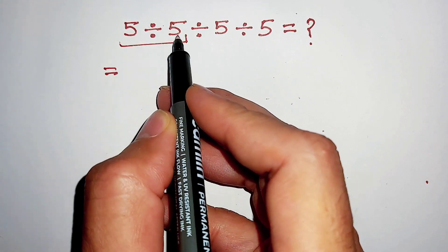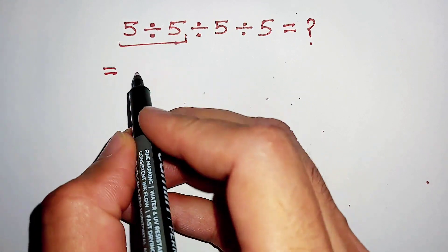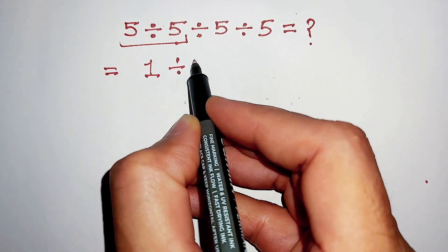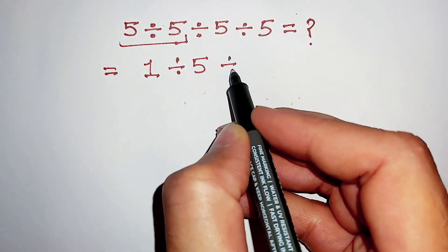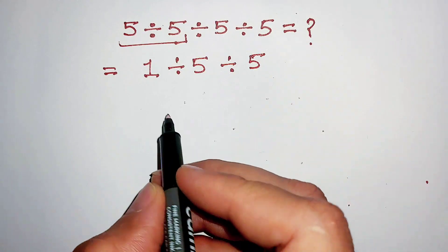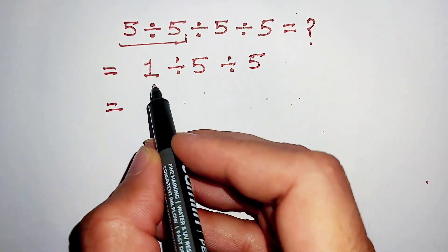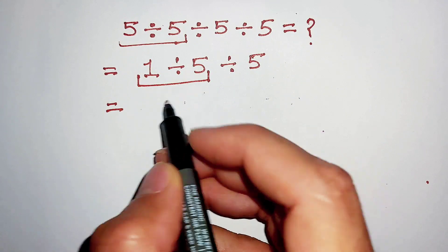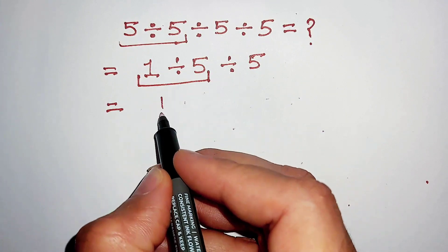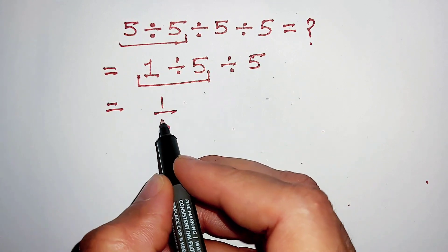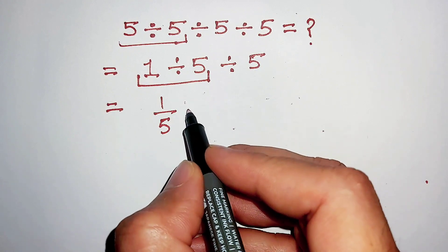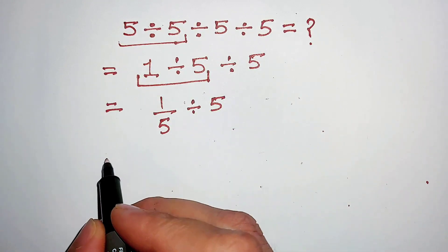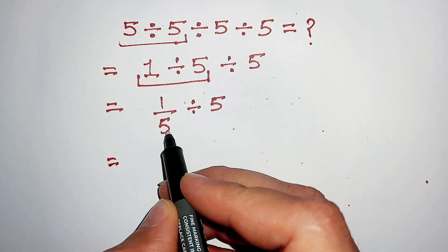5 divided by 5 is equal to 1, so we get 1 divided by 5, and then divided by 5. Now we will solve the term 1 divided by 5 divided by 5.